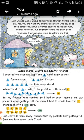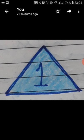I counted one star and kept one triangular blue card in my pocket. This is the triangular blue card with one written on it. One card for one star, two cards for two stars, three cards for three stars, four cards for four stars. Likewise, nine such cards for nine stars.